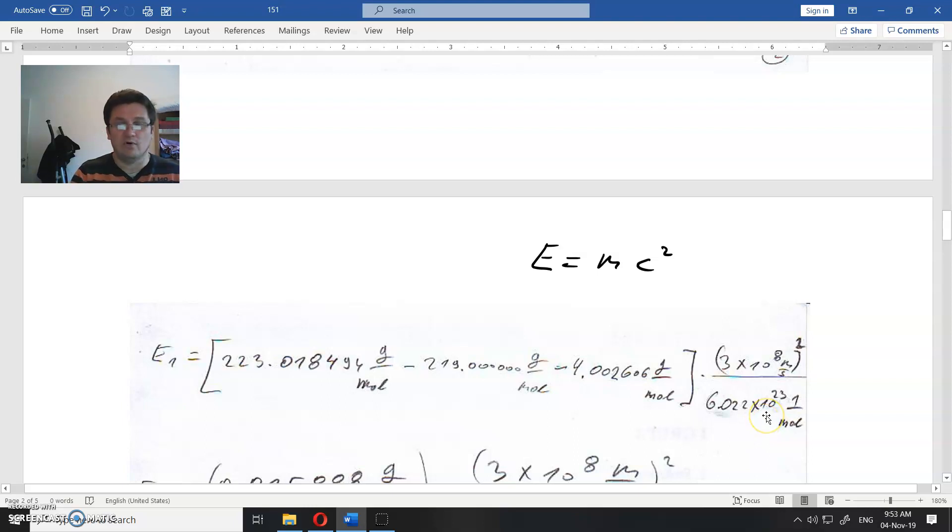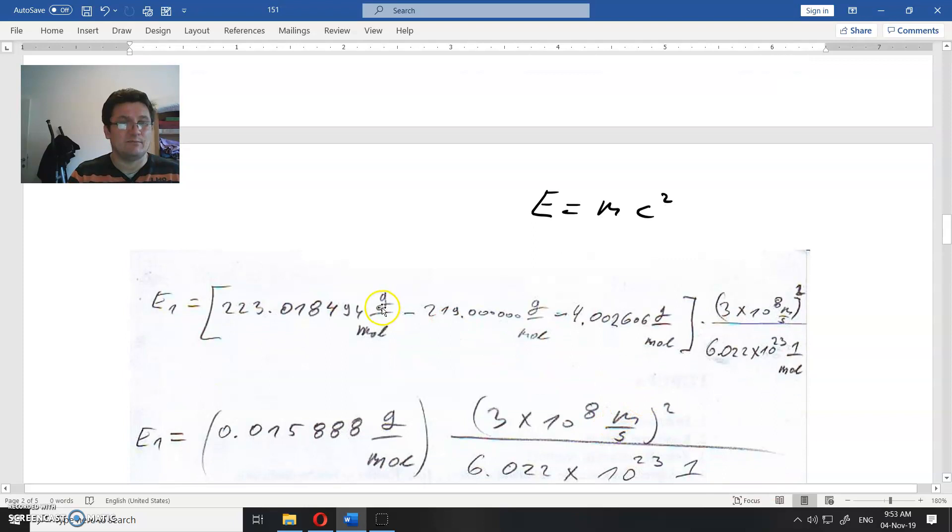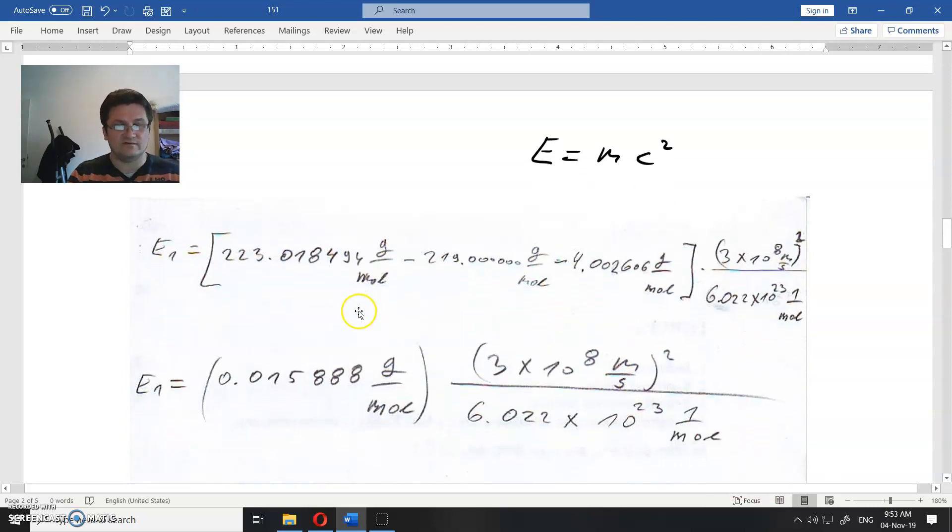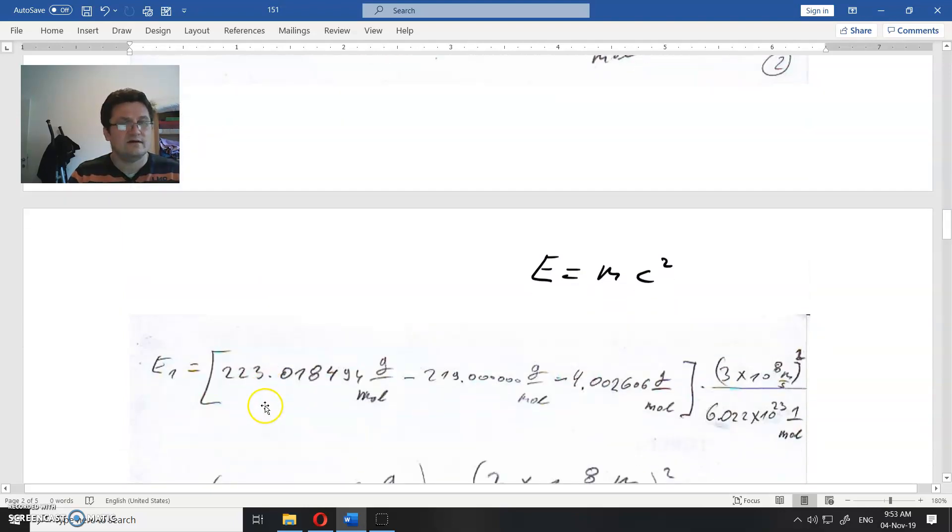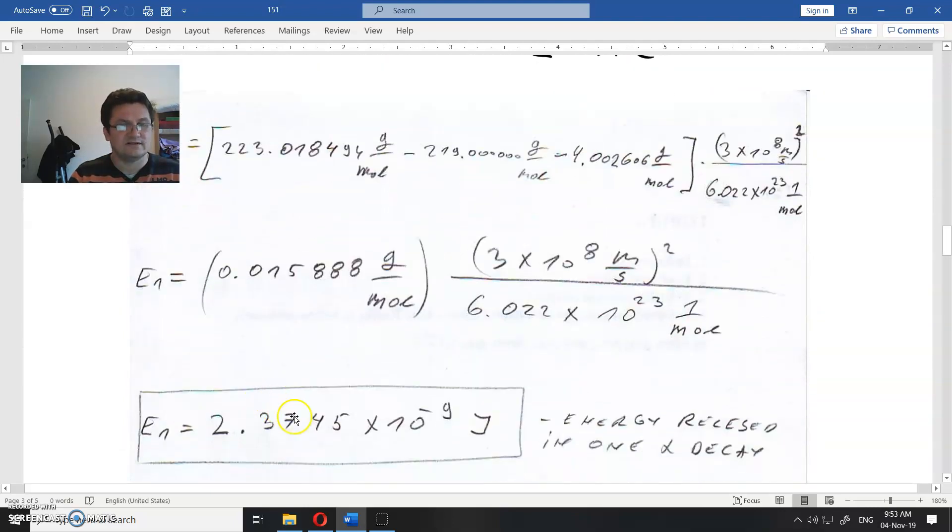This is the energy released by one incident only. If you have just one atom of radium that goes into radon and helium, that will release this much energy. This is the mass defect per mole, and this is how many atoms are in a mole times the speed of light squared. This is the energy released in one alpha decay of radium.